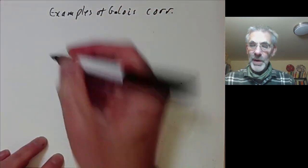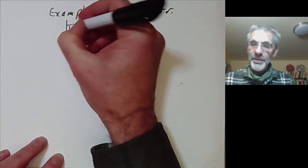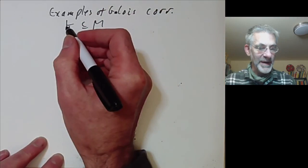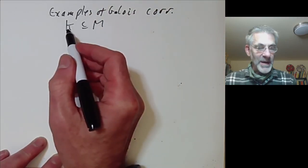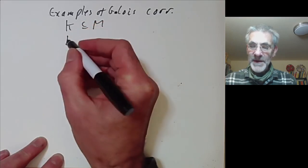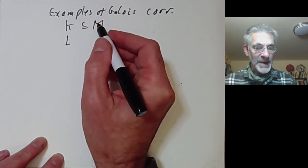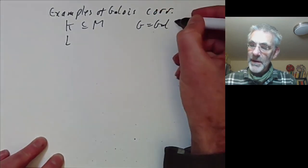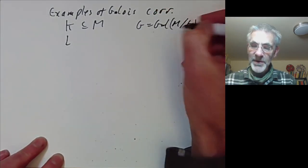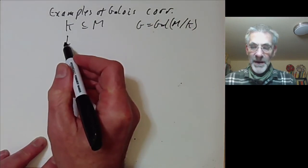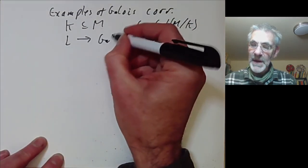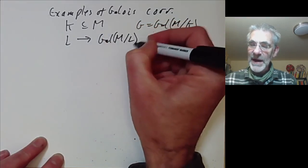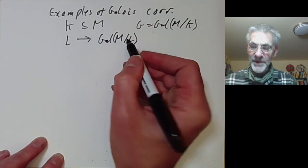We recall what this is. We have a Galois extension of fields, which we will take to be finite. There is a one-to-one correspondence between subfields of M containing L and subgroups of the Galois group of M over K. For a subfield L, we associate the group of automorphisms of M that fix all elements of L, which is the Galois group of M over L.